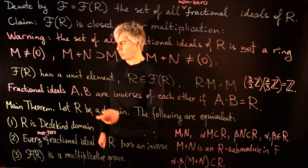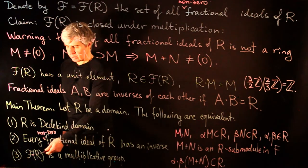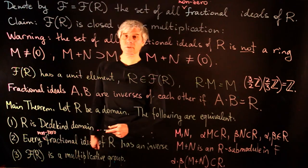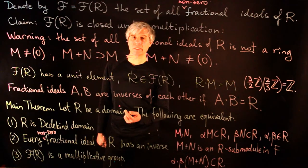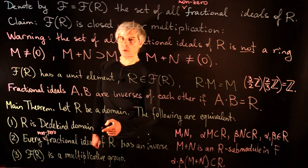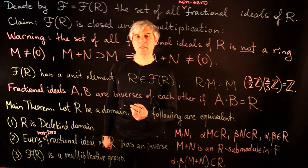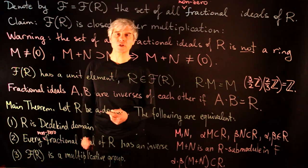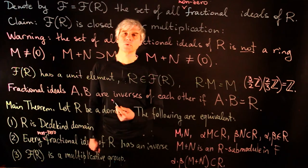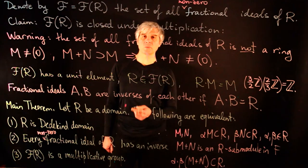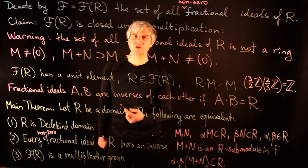The goal of this lecture is to prove the main theorem: that if we have a Dedekind domain, then the set of nonzero fractional ideals is a multiplicative group. The proof will be based on several ring-theoretic lemmas. We have a class of examples of Dedekind domains from algebraic geometry — polynomial functions on algebraic curves.